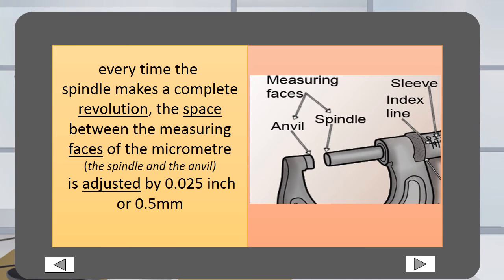Every time the spindle makes a complete revolution, the space between the measuring faces of the micrometer, the spindle and the anvil, is adjusted by 0.025 inch or 0.5 millimeters.